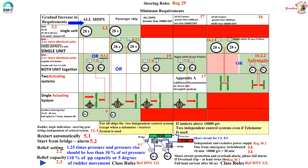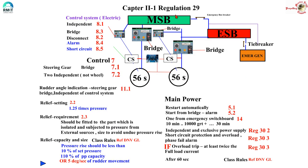Moving on to Regulation 29, Chapter 2-1 covers the requirements in detail about the steering gear. The main power circuit of the steering gear should be able to restart automatically after a power failure as per Regulation 29.5.1, and you should be able to start it from the bridge. Obviously you should also get alarms if power to the steering gear is lost.